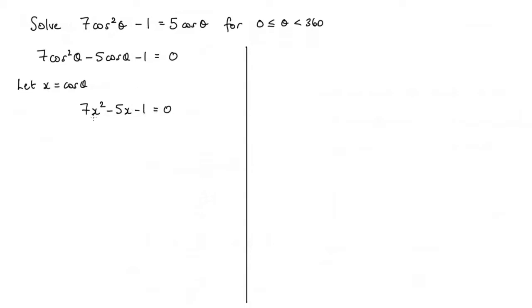So hopefully now you can see that we have a quadratic equation here. And to solve that quadratic, I can use the quadratic formula. So in other words, x is equal to minus b plus or minus the square root of b squared minus 4ac, and that is all over 2a.